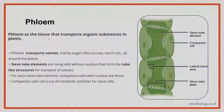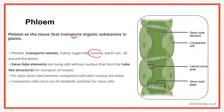Phloem generally transports organic substances in the plant, mainly sucrose along with amino acids. Sieve tube elements are elongated living cells — please remember they are not dead cells. They do not have a nucleus but they form the tube-like structure for the transport of solutes.